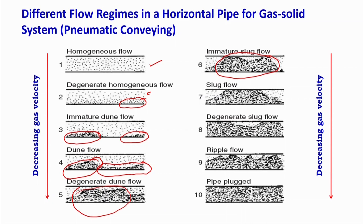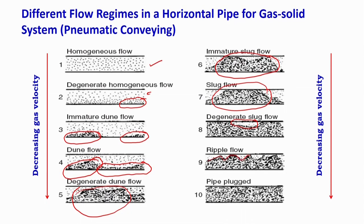If you further reduce velocity, the slug keeps increasing — this is complete slug flow. Further reduction leads to degenerated slug flow, where the whole pipeline is filled with solids and you see very small patches of air. Reduce further and you get ripple flow — the pipeline is essentially full of solids, with gas flowing only at the top creating a ripple-like structure at the boundary. If you reduce velocity still further, you will see no gas flow at all — the pipe is completely plugged with solid and flow stops completely, with no solid movement whatsoever.